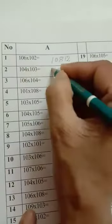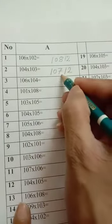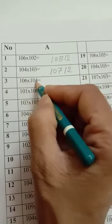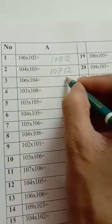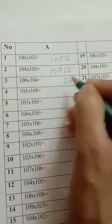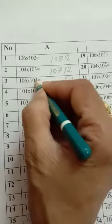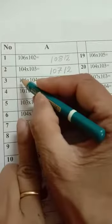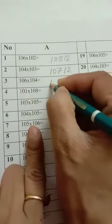Question number 3: 106 multiply by 104. 6 4s are 24. Then 6 plus 4 is 10. 10 is 0, carry is over, carry forward. 10 plus 1 is 11. Answer is 11024.